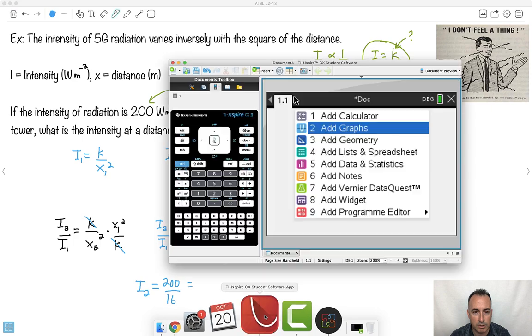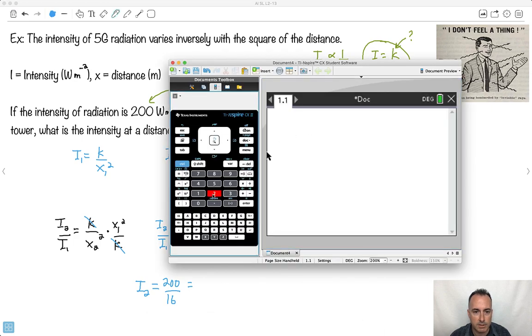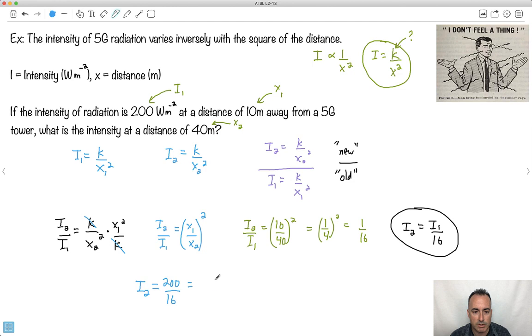I have 10 over 40 is the same thing as 1 over 4 squared, because they both just divide by 10. 1 squared is just 1, and 4 squared is 16. So if I want to solve for i2, i2 equals i1 over 16. i1 was 200 over 16, which is approximately 12.5 watts per meter squared.